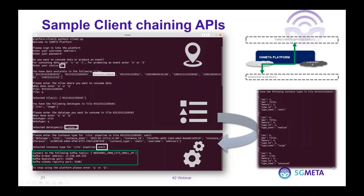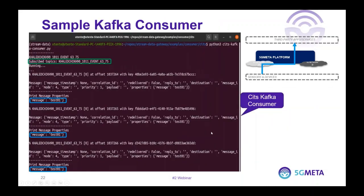With that information, we go to another example: a Kafka message consumer. We have the topic we are subscribed to, and then we receive the different CITS messages being produced through the 5G Meta platform from this location — from the tile we selected. This example shows how, once we have the topic, the third-party application or service consumes all messages coming from sensors and devices in real time.